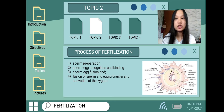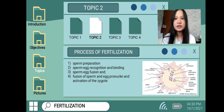The second step is sperm-egg recognition and binding. As the sperm approaches the egg, it binds to the zona pellucida in a process called sperm binding. This triggers the acrosome reaction, in which the enzymes of the acrosome are released. These enzymes then begin to digest the zona pellucida and allow the sperm to tunnel toward the egg's plasma membrane.